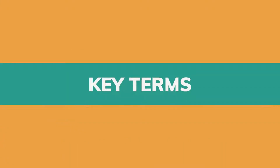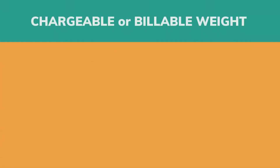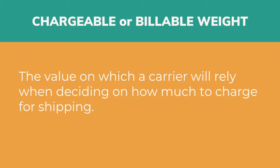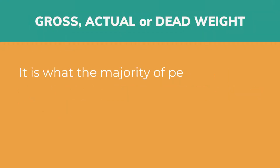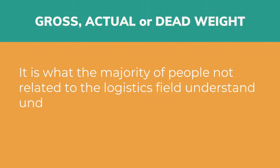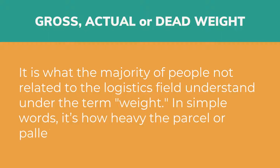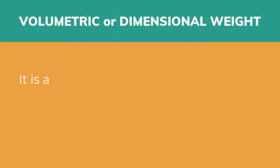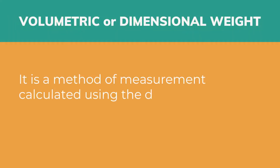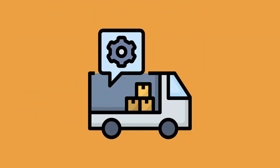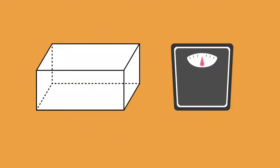Let's start with giving definitions to the key terms. Chargeable or billable weight is the value on which a carrier will rely when deciding on how much to charge for shipping. Gross, actual, or dead weight is what the majority of people not related to the logistics field understand under the term weight — in simple words, it's how heavy the parcel or pallet is. Volumetric or dimensional weight is a method of measurement calculated using the dimensions of the package. The scarcity of space involved in transportation and storage of goods led to evaluation of weight and volume becoming a common practice.